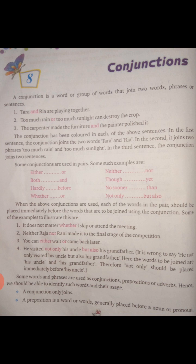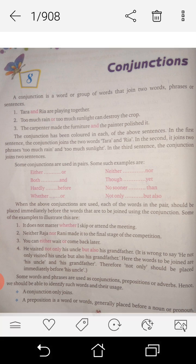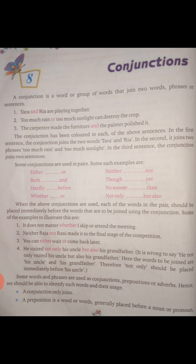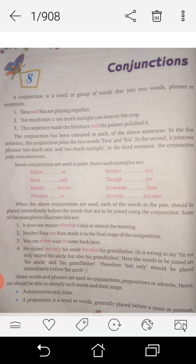Some conjunctions are used in pairs. Which are they? Read out, children: Either/or, Both/and, Before/whether/or, Neither/nor, Though/yet, No sooner/than, Not only/but also.